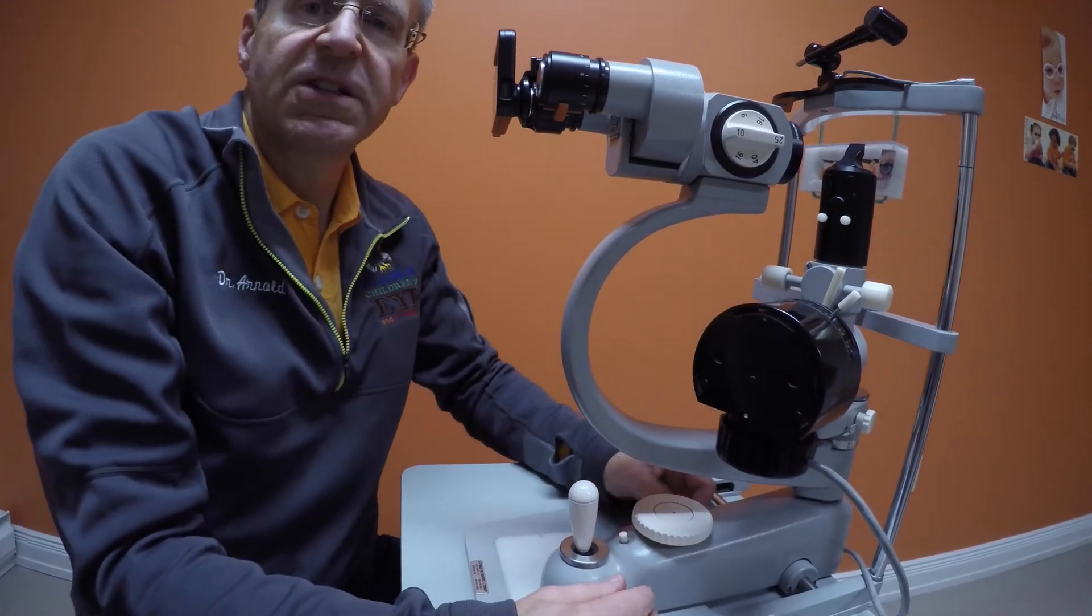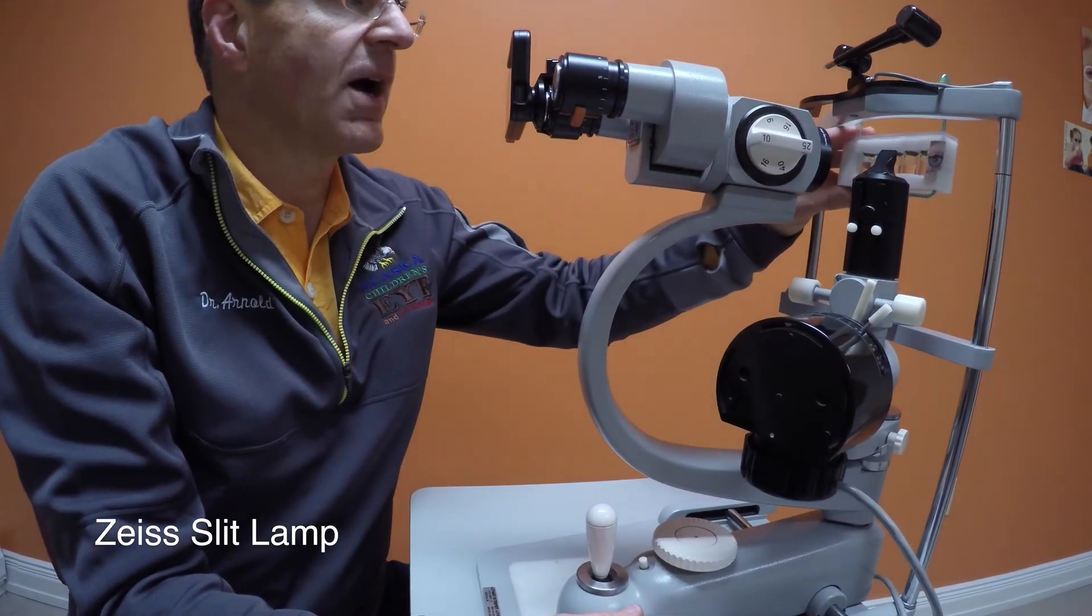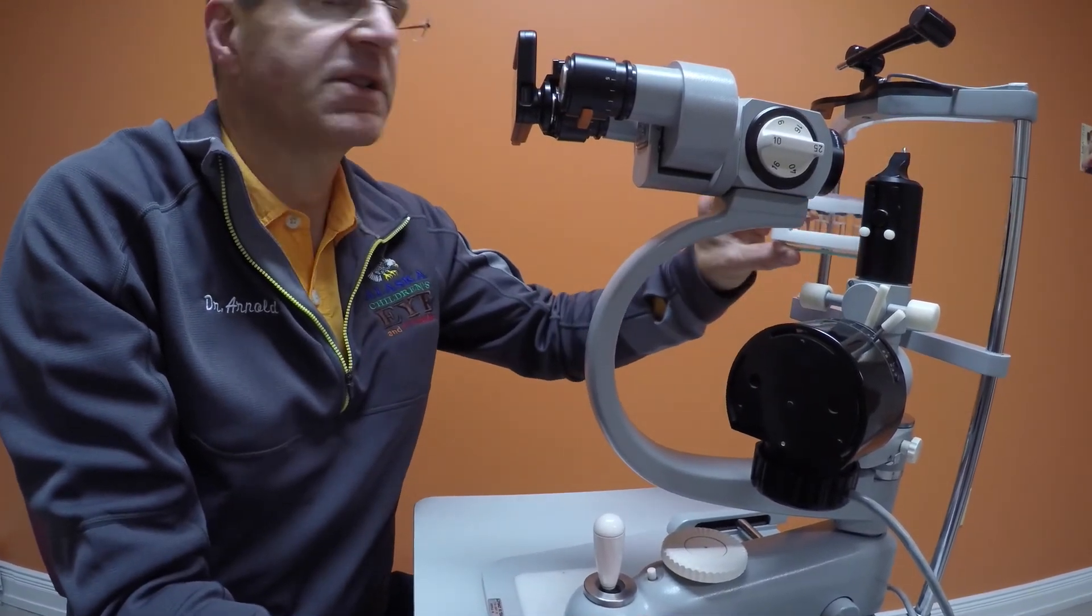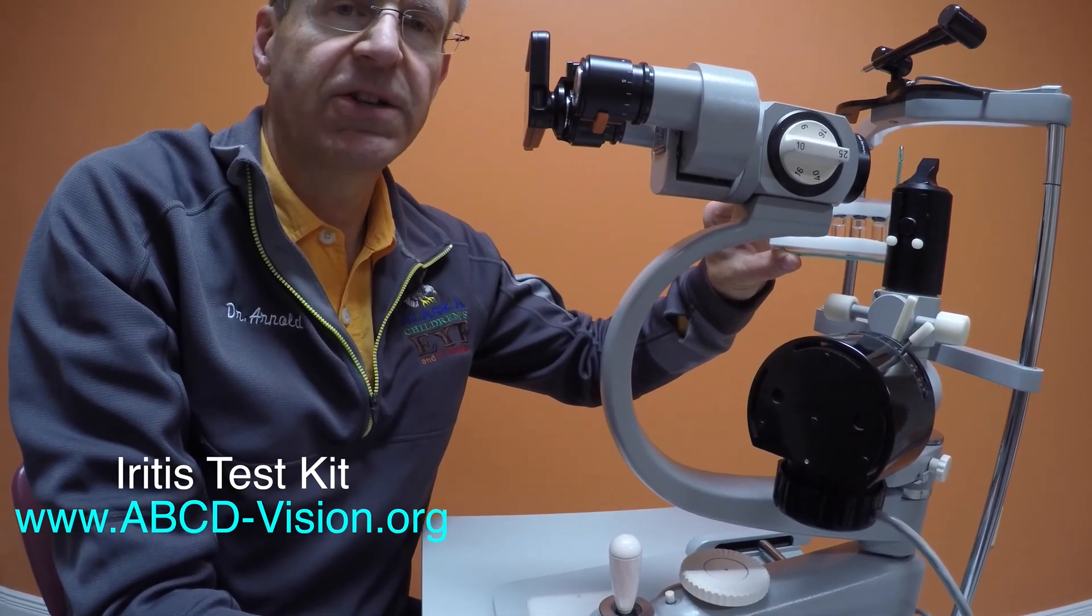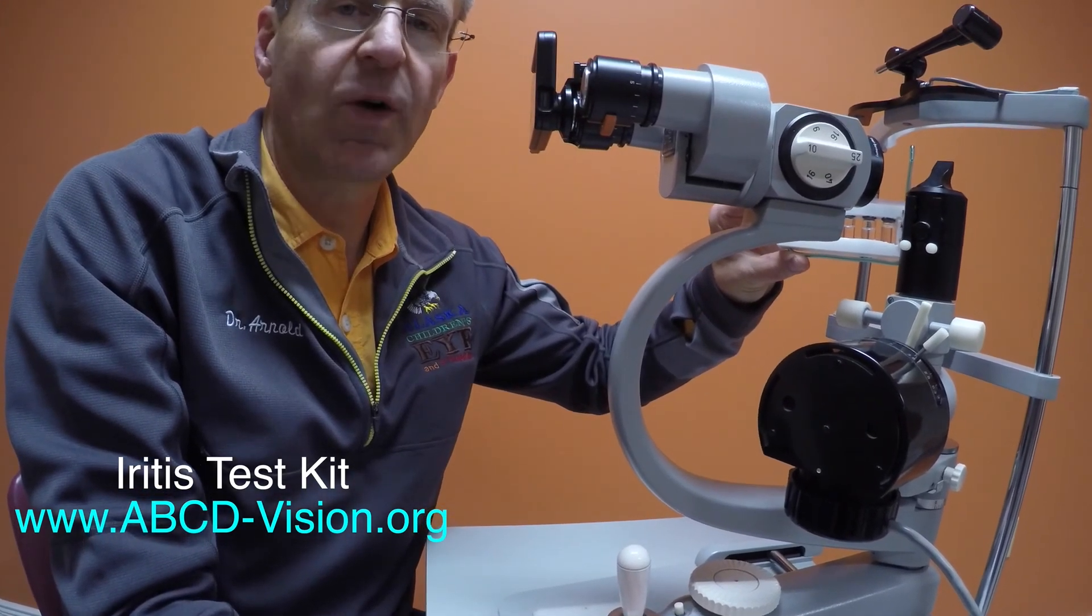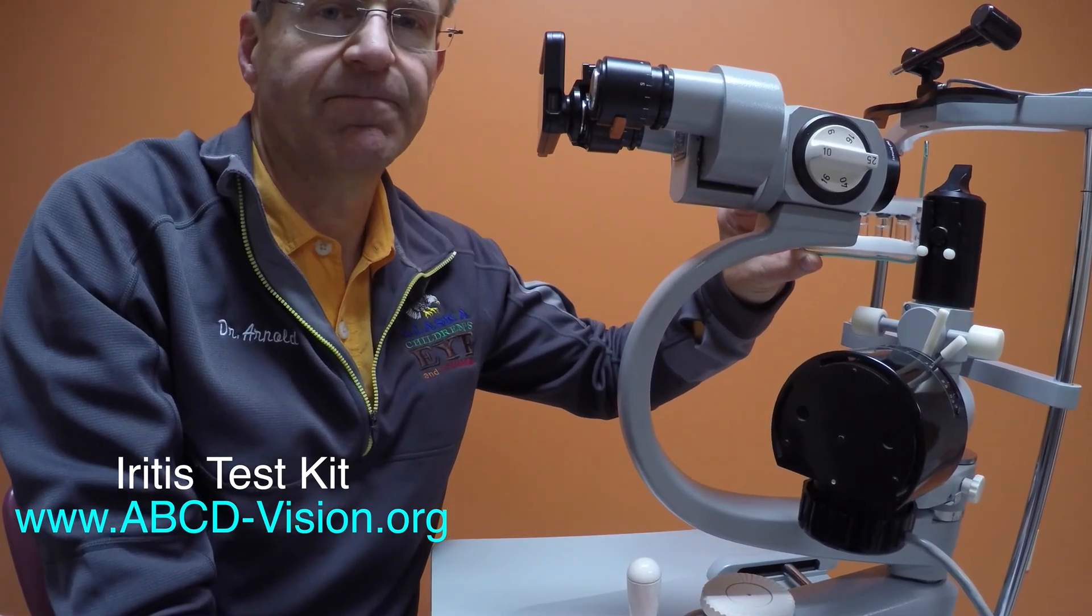We hope that this demonstration of a Zeiss slit lamp combined with an iritis test kit allows you to evaluate patients better for the presence or absence of white blood cells floating in the anterior chamber or iritis. Thank you.